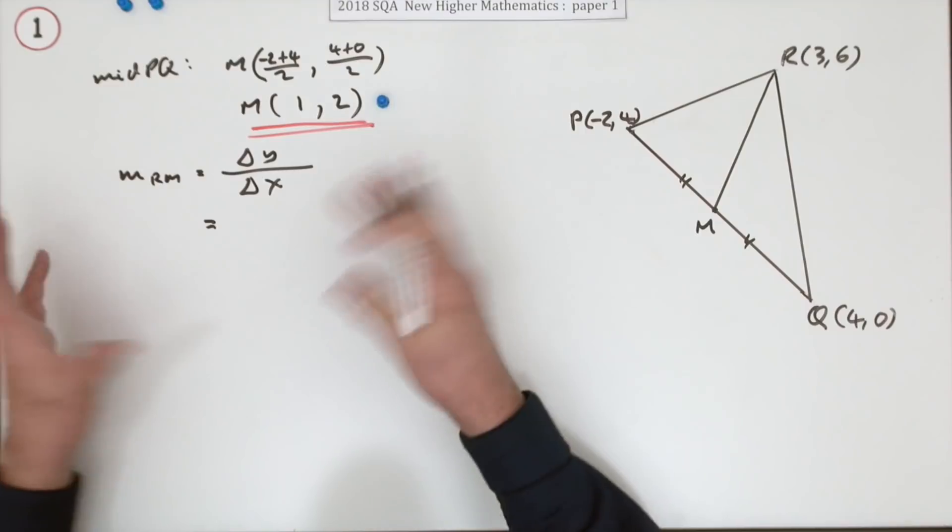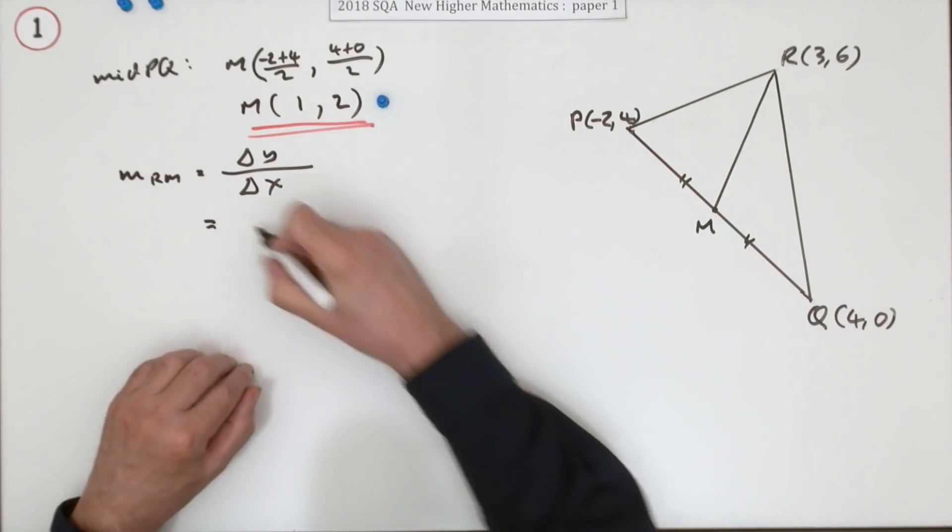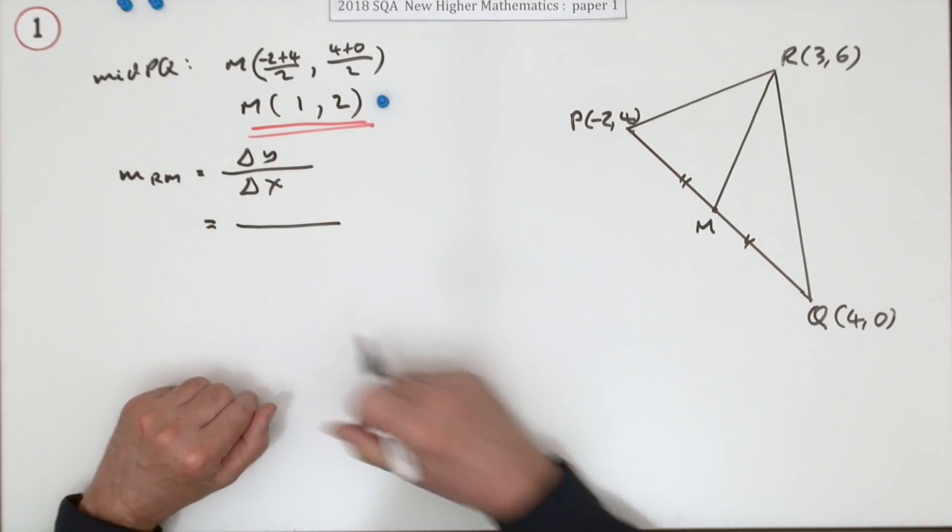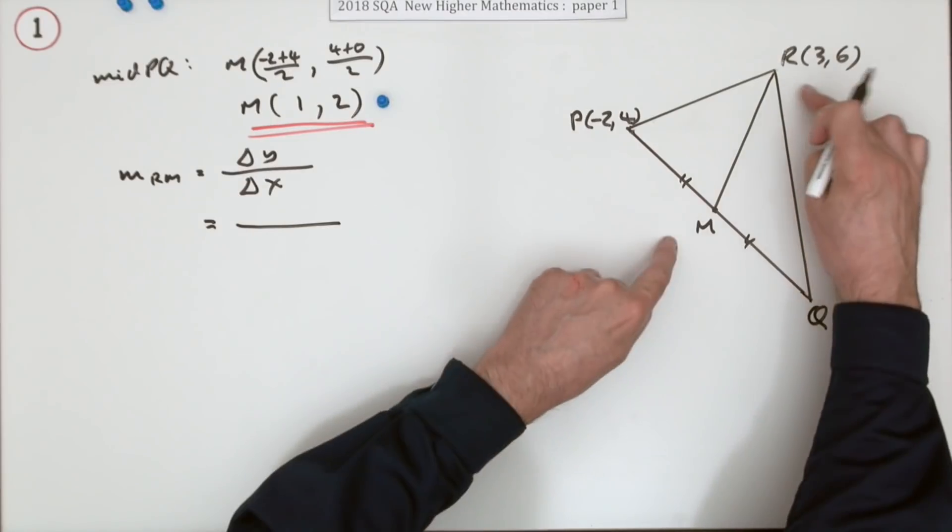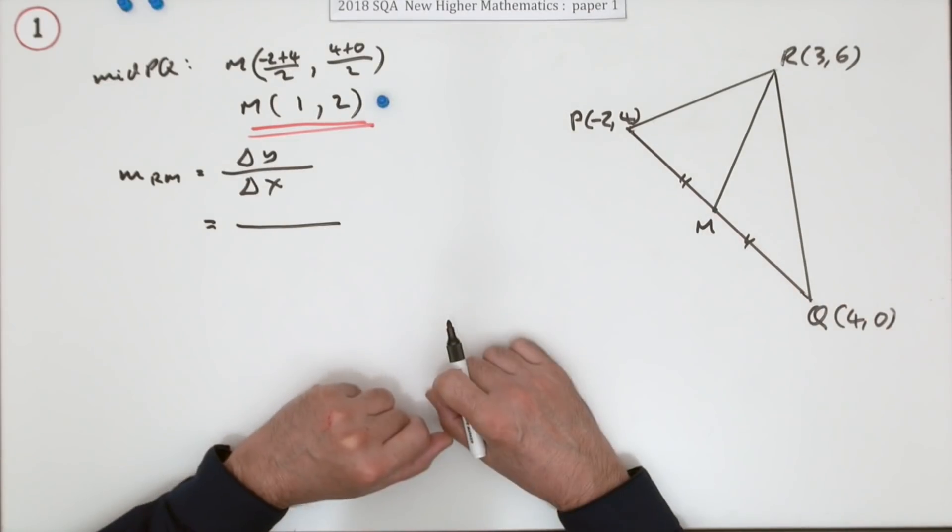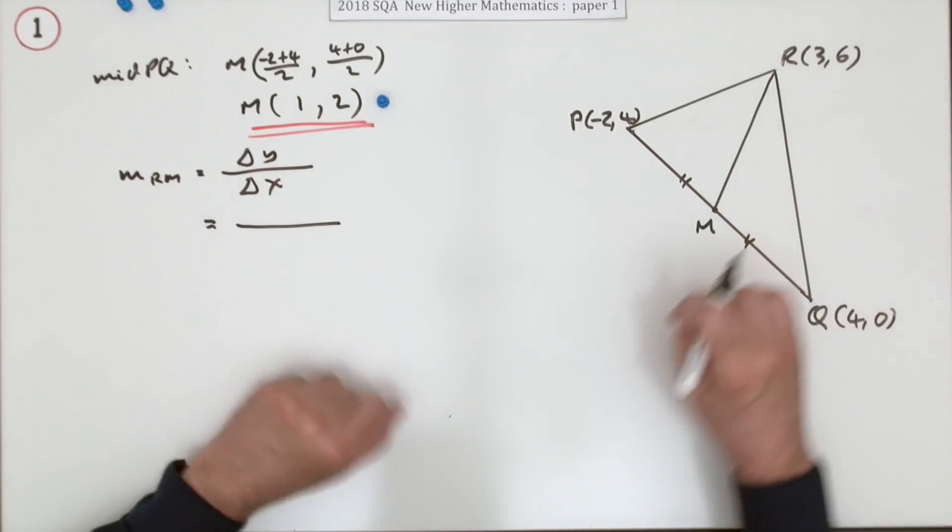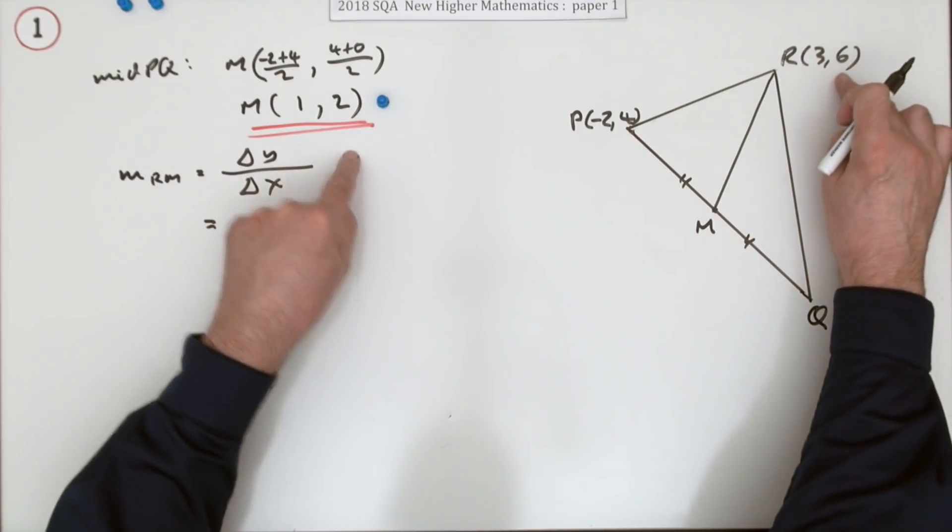Or even, because it's only just for the one mark, go straight in with the coordinates. Let me make sure you use the right points. So these two points, don't let these two catch your eye. So it's the difference in these two. Difference in the y's first. 6 and 2.